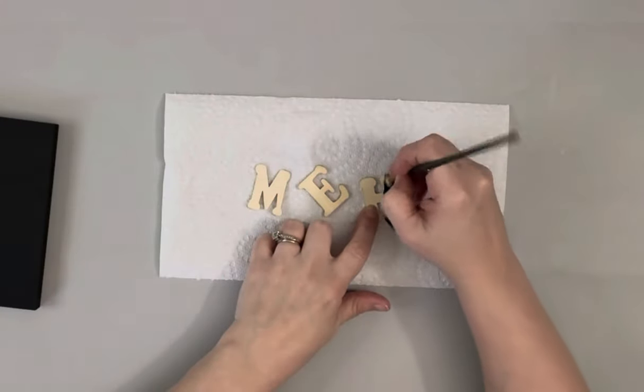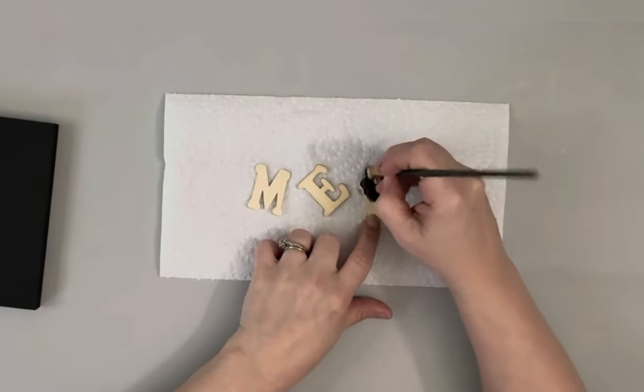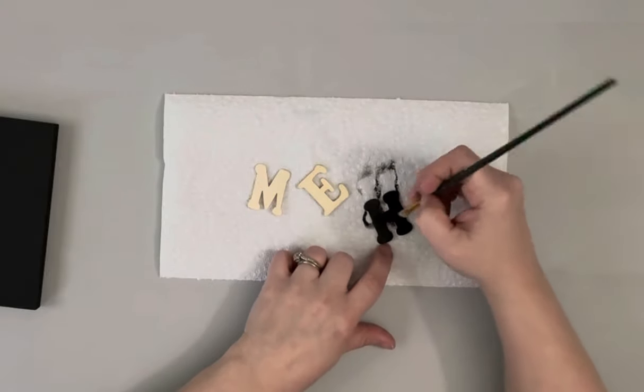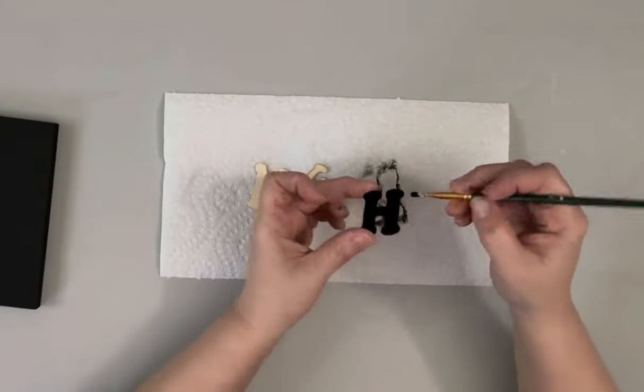Then I took these inch-and-a-half letters that I got from Amazon and painted them with the same chalk paint, making sure to get the sides.